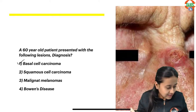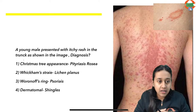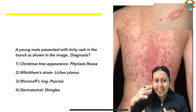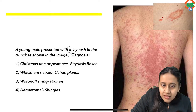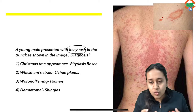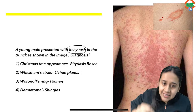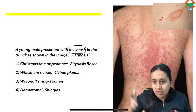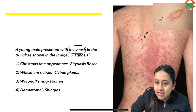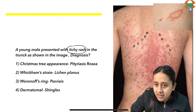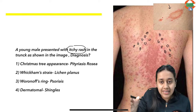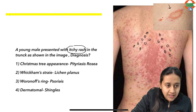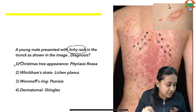Moving to the next question: a middle-aged or young individual presented with a rash — some students said it was itchy, some said asymptomatic, but the answer will not change either way. In the image you can see a very classical distribution of lesions in an inverted fir tree or Christmas tree pattern. In the smaller image you can also see the classical collarette scale associated with a herald patch.